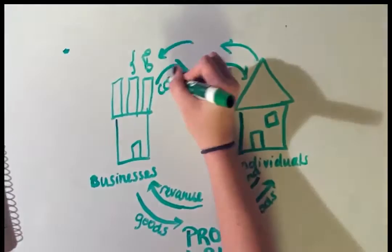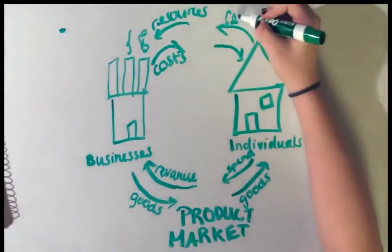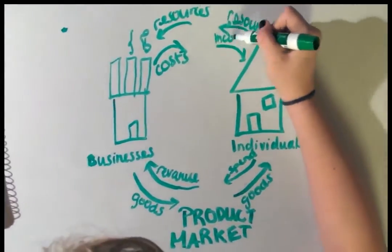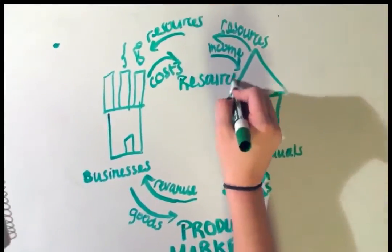But in the Factor Market, the individuals provide resources to the businesses. And the business's cost for these resources become the individual's incomes.